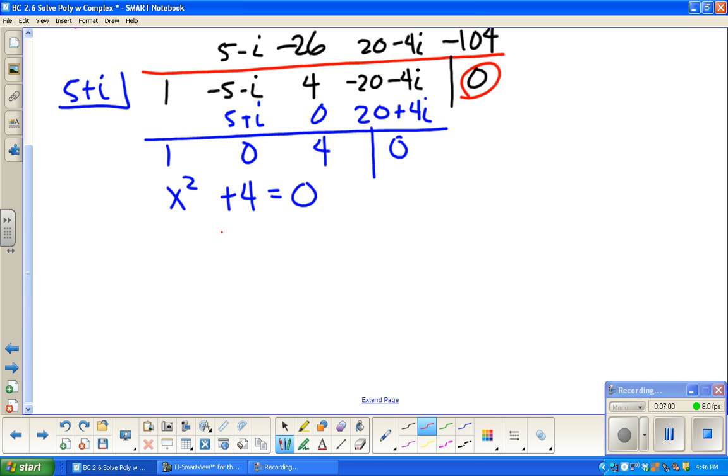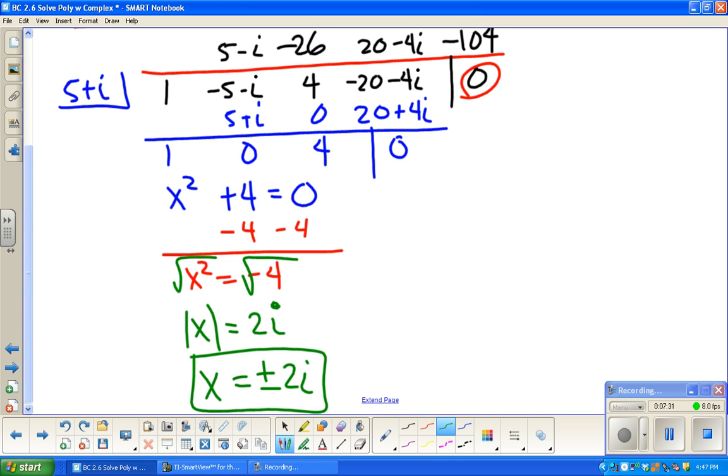So solving this, I'm going to subtract 4 from both sides. You can do quadratic formula here again, but this is probably not necessary. I'm going to take the square root of both sides. The square root of x squared is absolute value of x. And the square root of negative 4 is actually 2i. When I get rid of the absolute value, that means it could have been a positive or a negative 2i. Just a quick recap. These are not the only solutions. Remember, we were given 5 minus i. We also knew about 5 plus i. These are our solutions.